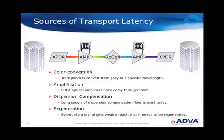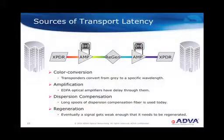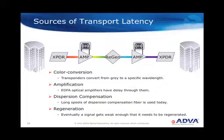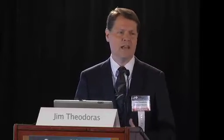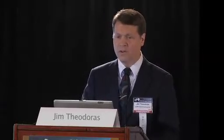Since this is what ADVA specializes in, I'll briefly touch on the sources of transport latency from your equipment. I've listed four major ones. One is color conversion — WDM carries information on a color on a fiber, and you've got to get your information onto a color. There are different ways of doing it — slow or fast — and ADVA is very good at that. Amplification: as the light goes through the fiber, it gets weaker. Amplifiers make that optical signal stronger. There's a lot in an amplifier — spools of fiber, slope compensators — and all these things can slow down your signal. How you do an amp matters, and ADVA builds its own amps.